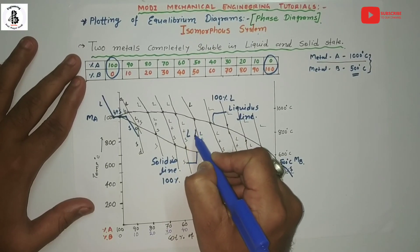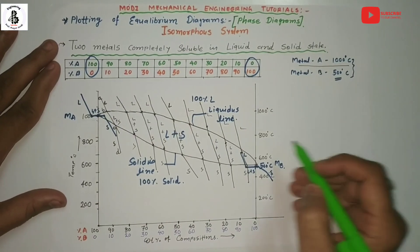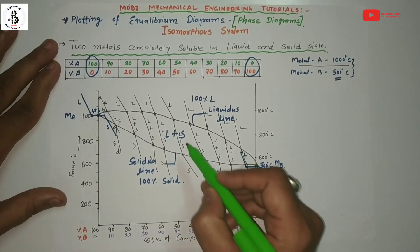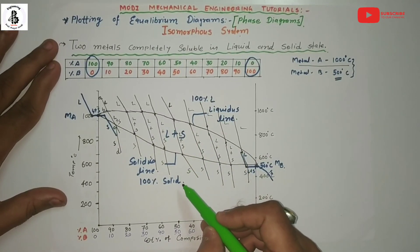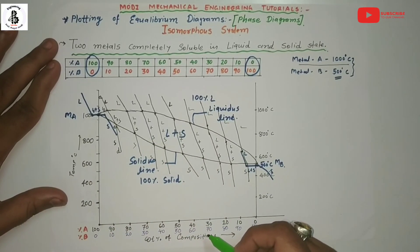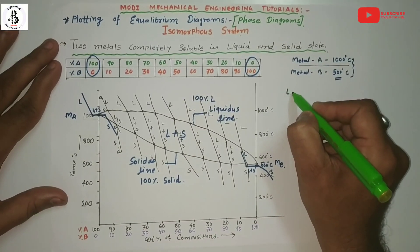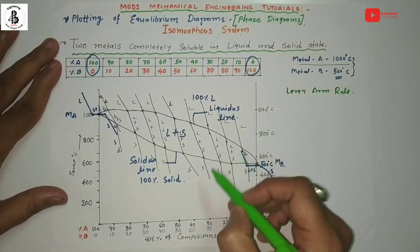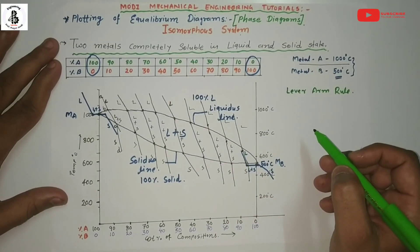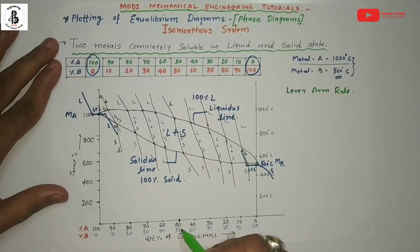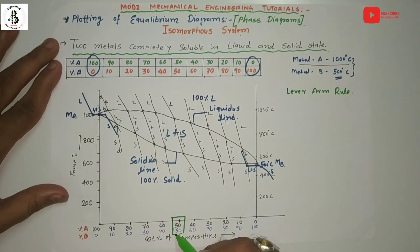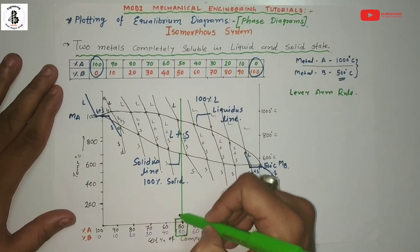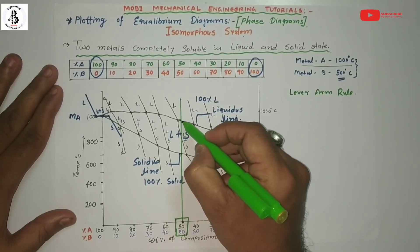That is the formation of the equilibrium diagram for isomorphous systems — two metals completely soluble in liquid and solid state. Above the line passing through the starting points of solidification is 100% liquid phase; this line is called the liquidus line. The line passing through the end points of solidification, below which is 100% solid, is called the solidus line. In between any composition of A and B with 100% solubility, we get liquid plus solid. After plotting the liquidus and solidus lines, if you want to find the weight percentage of liquid and solid at different conditions of temperature and composition, we use the lever arm rule.